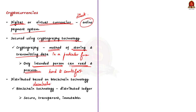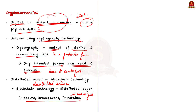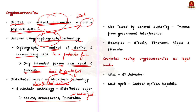You just need to know that cryptocurrency is a virtual currency used for payments through online systems, using cryptography and blockchain technology. A defining feature of cryptocurrencies is that they are generally not issued by any central authority, making them immune from government interference. Some examples of cryptocurrencies include Bitcoin, Ethereum, Ripple and Litecoin.